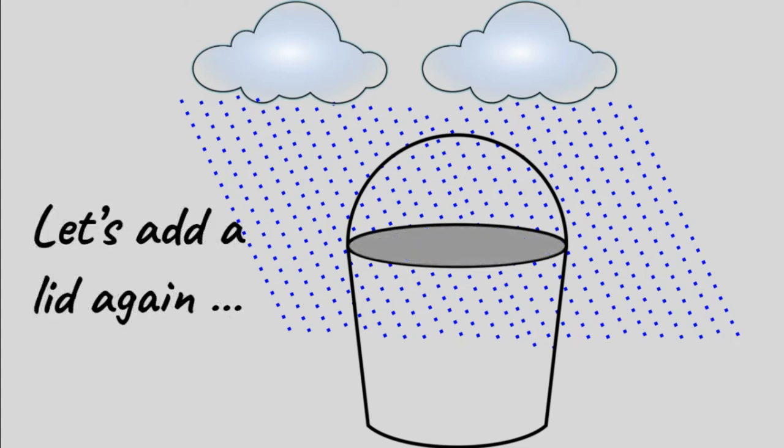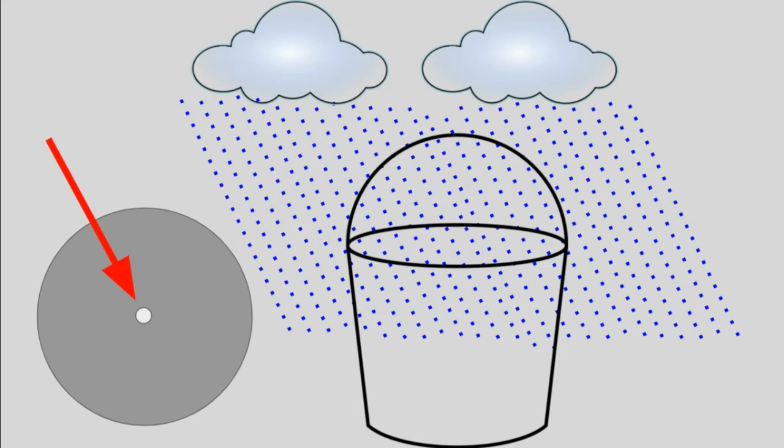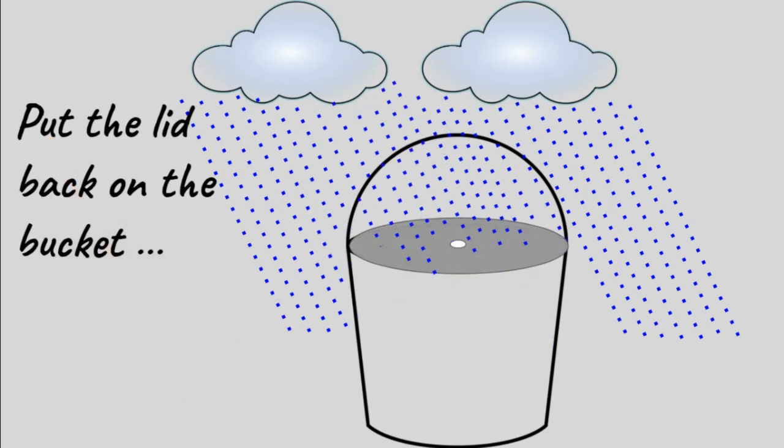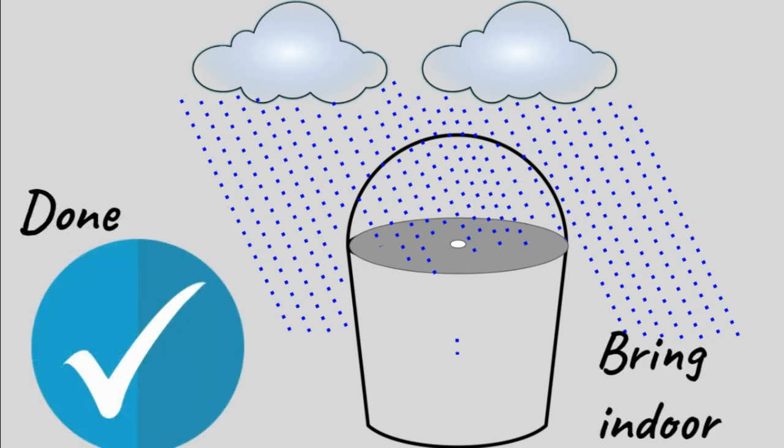So let's add a lid back on the bucket. But this time, we take the lid and then poke a tiny hole in the center of the lid. Now it has an opening. What this will do is start the water collection process and it will be very slow because of the opening being tiny. You can keep an eye on the bucket and as soon as two drops enter the bucket, you bring it indoors and done.